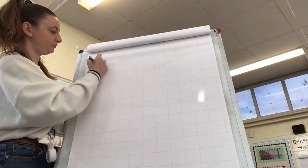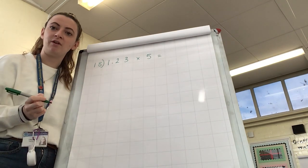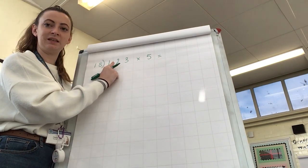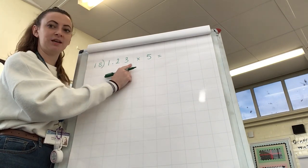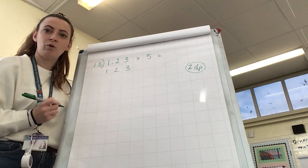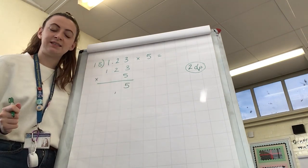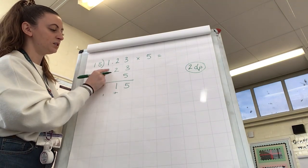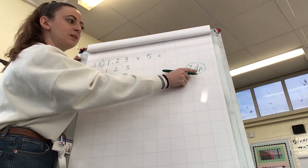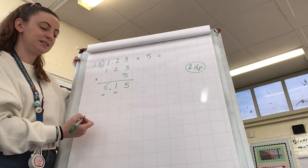Question 18 was 1.23 times 5. I'm going to rewrite this question out in the column method, but I'm going to remove the decimal points. And now it looks like 123. I'm removing the decimal point, but I need to take a note that there are two decimal places after the decimal point. So I'm just going to put here 2dp, two decimal places. And then I'm going to write in the column method, 123 times 5. 3 times 5 is 15. 2 times 5 is 10, plus the 1 is 11. 1 times 5 is 5, plus 1 is 6. So my answer to this part of the question is 615. However, I need to remember to count back those two decimal places. So from the furthest column on the right, I'm going to go 1, 2. My answer is 6.15.